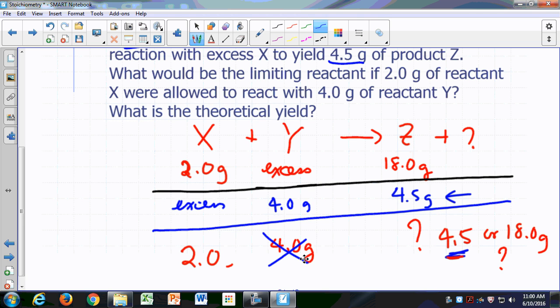You can't make more than 4.5. By the time you get the 4.5 grams of Z, all the Y is gone. You can't make any more. That means you're not going to use up the 2 grams of X. You're not going to get that 18 grams. The most you can make is 4.5. That's your theoretical yield. So you would say that your Y is your limiting reactant. In this particular scenario, it controls how much Z you can get. The most Z you can get is 4.5 grams. Your theoretical yield is 4.5 grams.